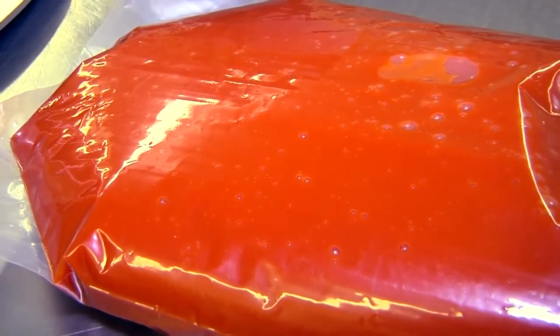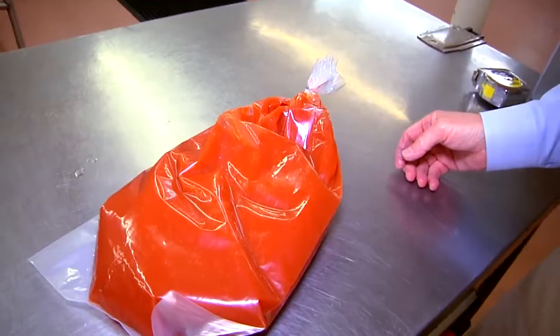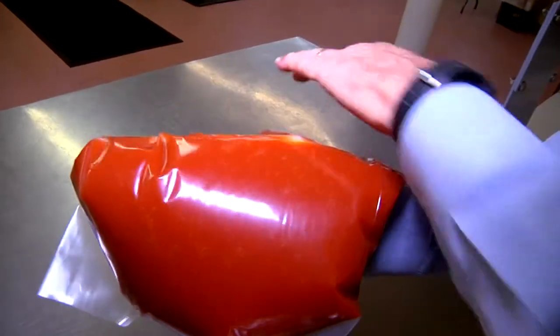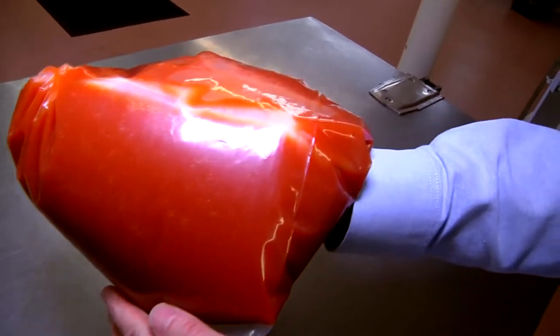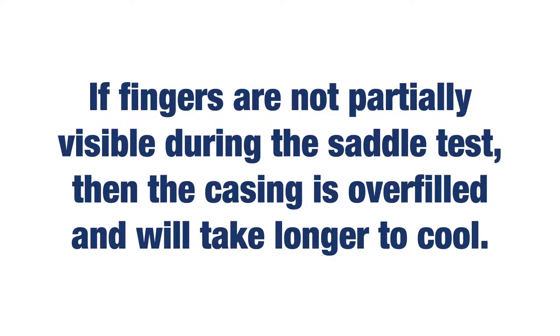There are two ways to test your fill level. One is the saddle test. Place the filled casing over your extended fingers, evenly distributed like a saddle bag. Fingers should be partially visible through the center of the casing. If not, the casing is overfilled and will take longer to cool.